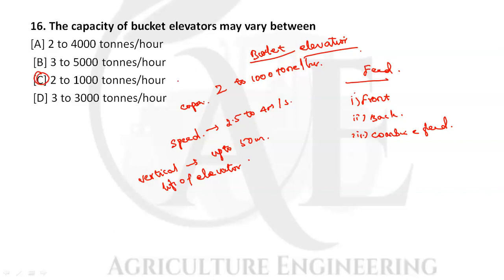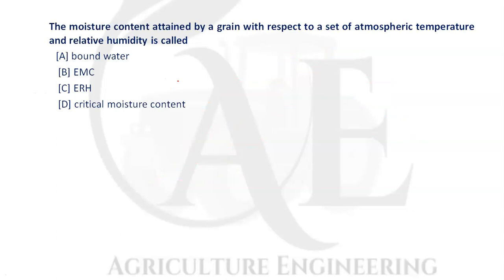Next question: the moisture content attained by a grain with respect to a set of atmospheric temperature and relative humidity is called what? This is known as equilibrium moisture content, or EMC.